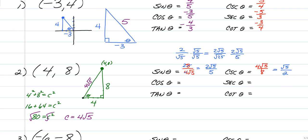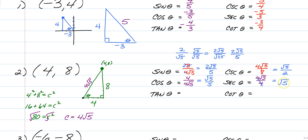Cosine is adjacent over the hypotenuse, so adjacent would be 4 over the hypotenuse 4 root 5. The reciprocal would be 4 root 5 over 4. Make sure you simplify both of them. The 4s cancel, leaving 1 over root 5, which you multiply top and bottom to get root 5 over 5. The secant — the 4s cancel — so this is just the square root of 5.